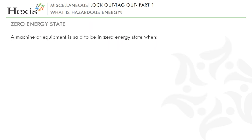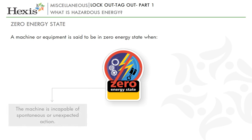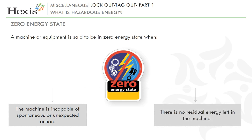For safety during maintenance, a machine or equipment needs to be in a zero energy state. A machine or equipment is said to be in zero energy state when the machine is incapable of spontaneous or unexpected action. There is no residual energy left in the machine. Let us now look at the various types of energy.